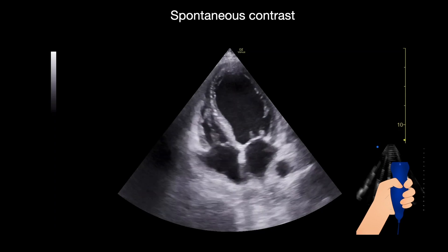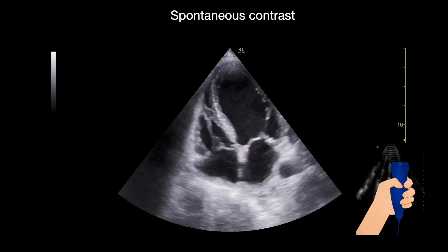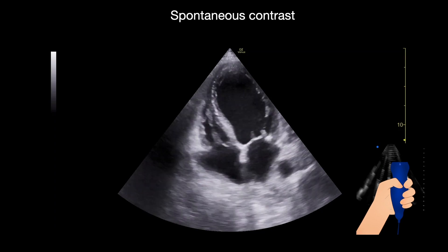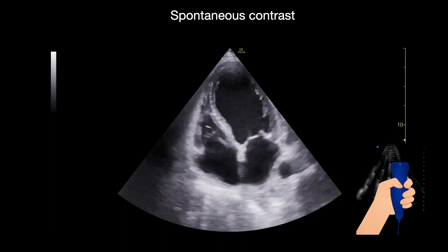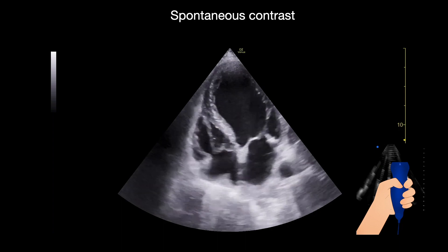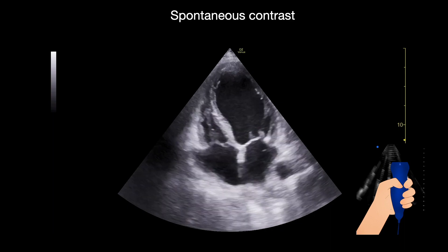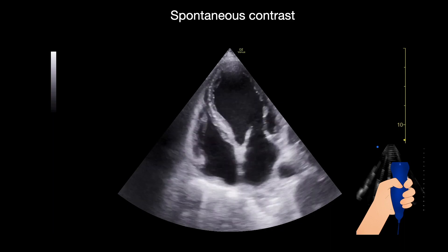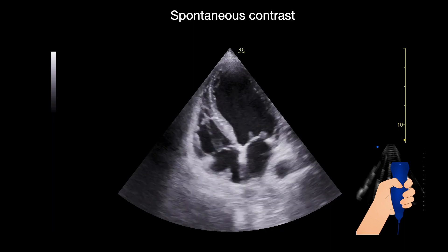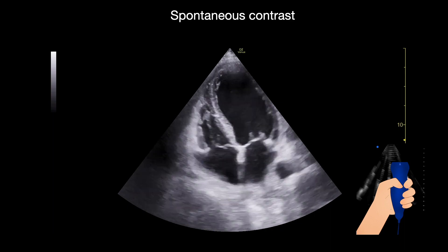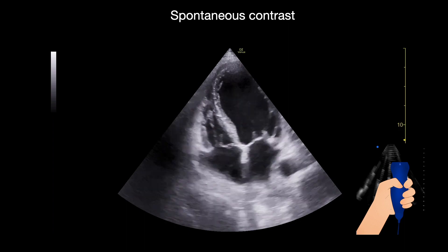Spontaneous contrast is a smoke-like effect that is caused in vessels because of the presence of low flow, turbulent flow, and erythrocytes as well as fibrinogen.